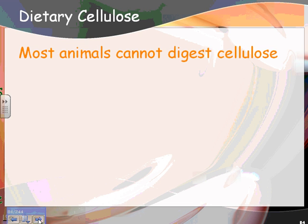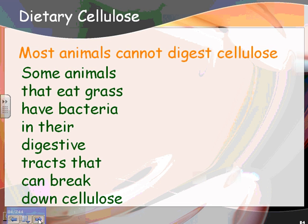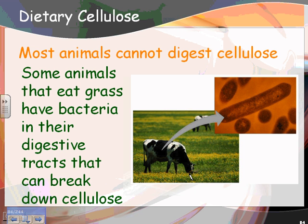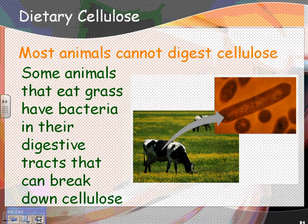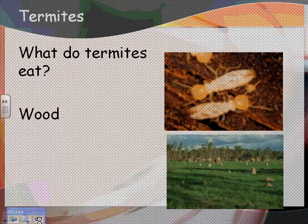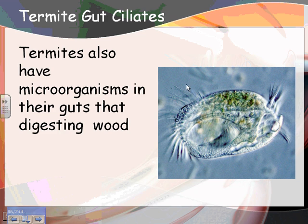Most animals cannot digest cellulose — humans cannot. But some animals that eat grass, like cows, have bacteria in their digestive tracts that can break down cellulose, allowing the cow to absorb the resulting nutrients. Termites eat wood, which has a lot of cellulose in it. Termites have microorganisms living in their guts that digest the wood, and then the termite can take up those glucose molecules.